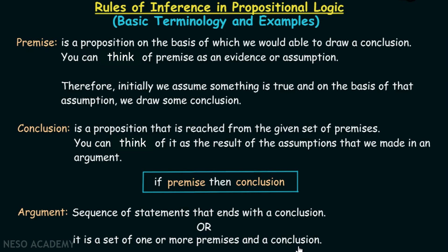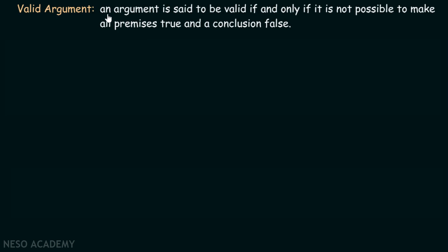Now let's talk about what is a valid argument. An argument is said to be valid if and only if it is not possible to make all premises true and the conclusion false. That is, it is not the case that if p is true then q is false — if p is true, then q has to be true.